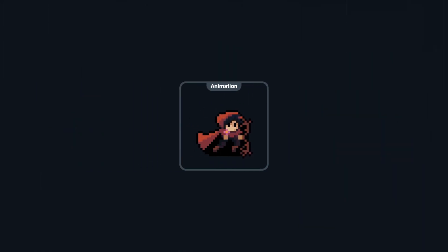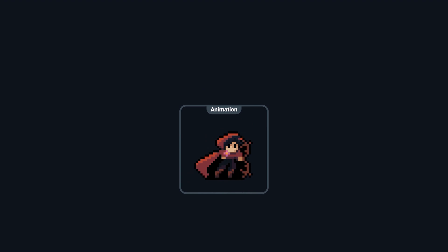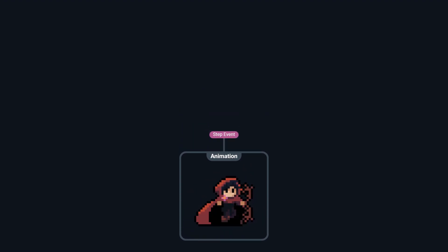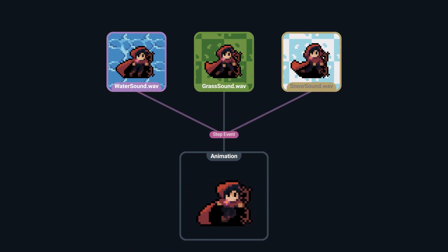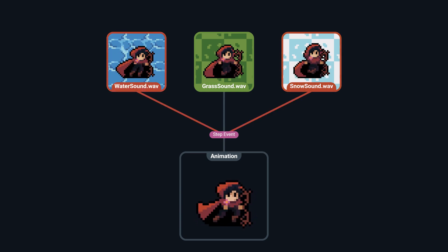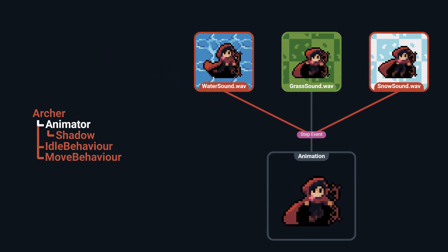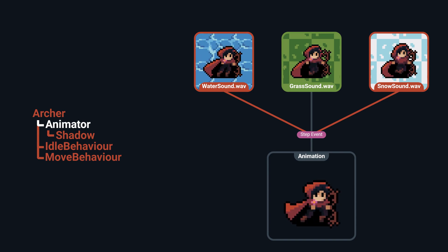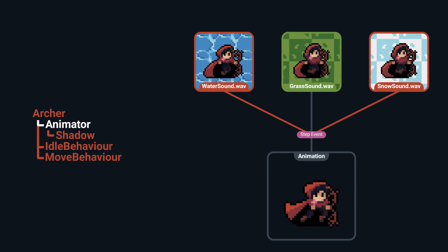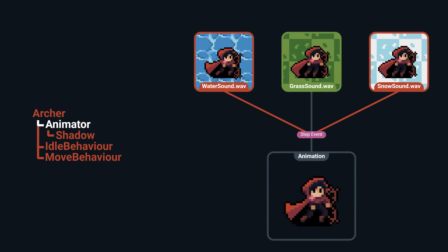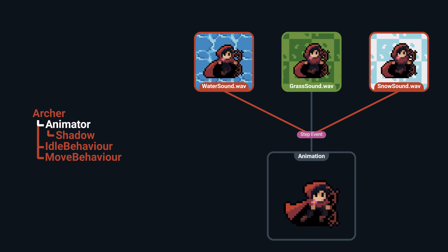Another problem with Unity's animator is the way it handles events. Events are directly assigned to animations, meaning we can't change them depending on what situation we are in, and we can only assign methods that live on the animator's game object. This is a big no-no for someone like me who likes to split functionality between multiple child objects. And I won't even mention the animator hell.